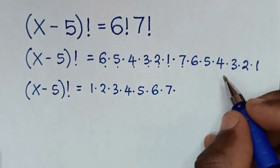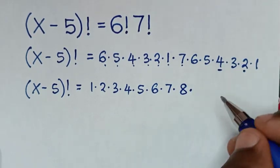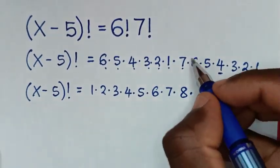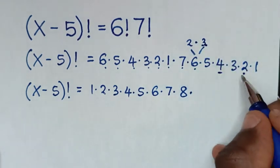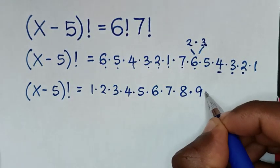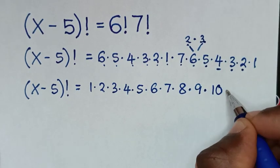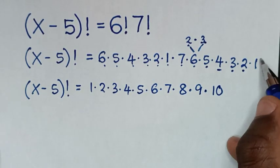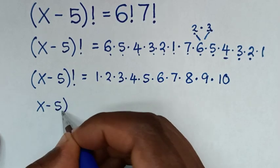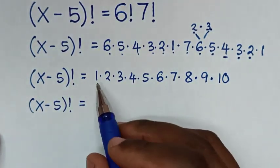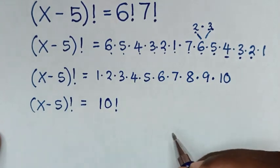Now from times 7 we are going to find times 8. From 4 times 2 we get 8. Then to find 9: from 6, which is 2 times 3, then times 3 gives us 9. Then we find 10: from 5 times 2 it is 10. Then we are left with 1, which is the same thing.